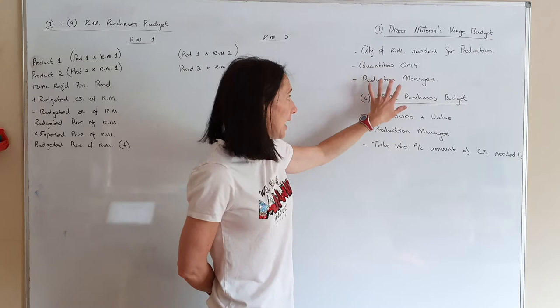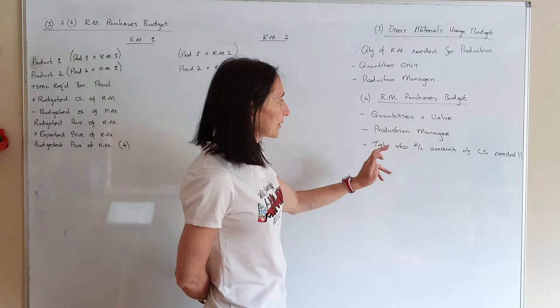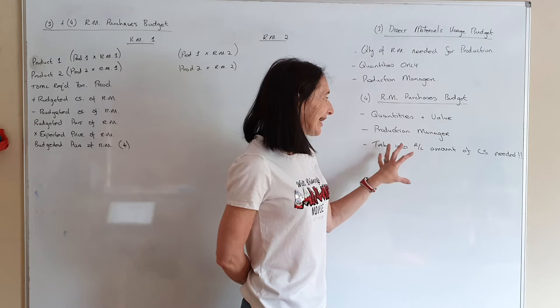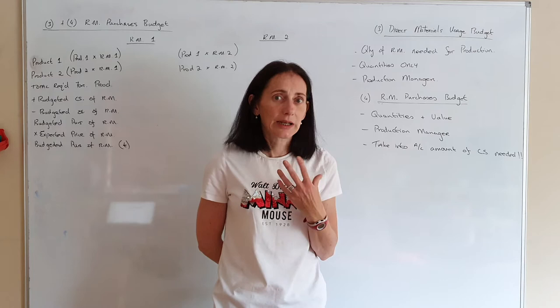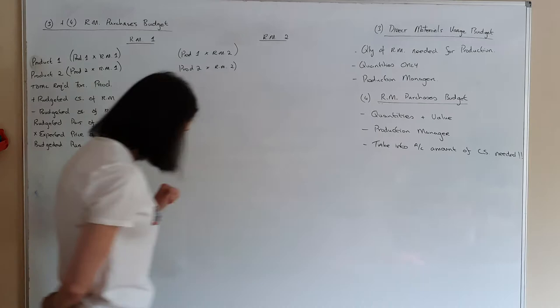Once you know how much raw materials you need, you're going to have to buy them — that's your raw materials purchase budget. Because you're purchasing something, you need it in quantities and you need to know how much it's going to cost, so this is in quantities and value. Again, it's done by the production manager. You also need to take into account your closing stock — say it's the end of May, you don't want to come into your factory in June with no raw materials, so you always need to carry some closing stock to stay in production.